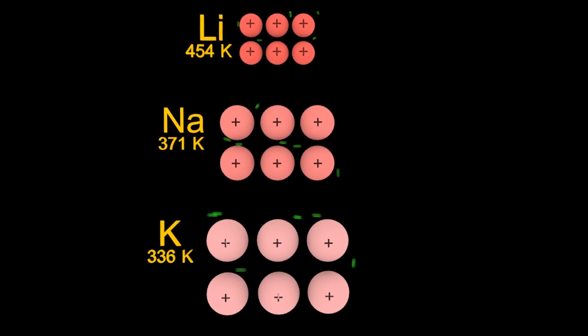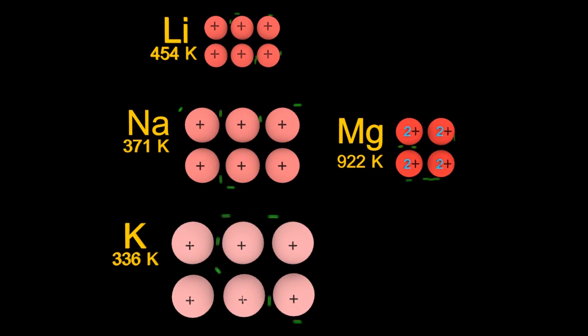Now for magnesium ions, they're even smaller than sodium, they're 2+, and there's twice as many electrons—that's a much bigger electrostatic attraction and therefore a higher melting point.